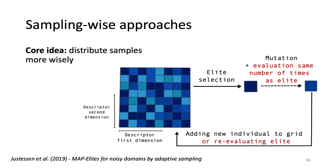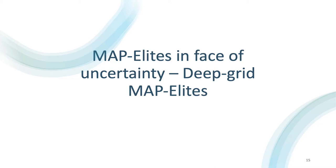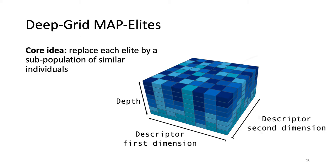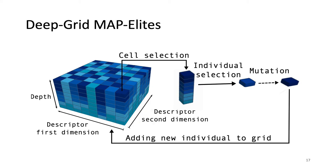In this work, we propose a totally different approach called deep grid map elites, which is not based on sampling at all, but instead on reusing previously encountered solutions. The core idea of deep grid is to replace each elite in the MapElites grid with a subpopulation of similar individuals — simply adding a depth to the grid and keeping multiple solutions per cell. The deep grid algorithm is very similar to MapElites; the only difference is that you first select a cell and then an individual within that cell before mutating and adding it back to the grid.